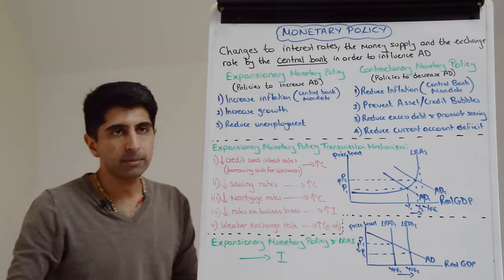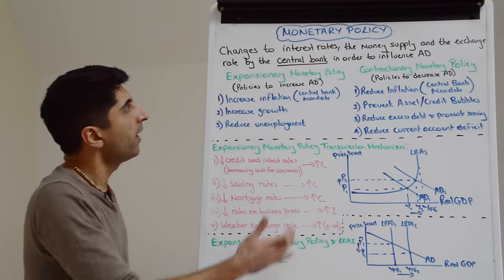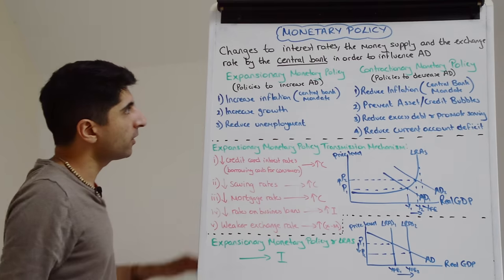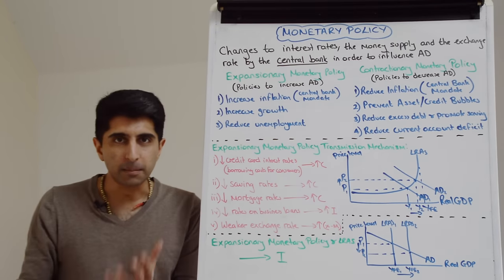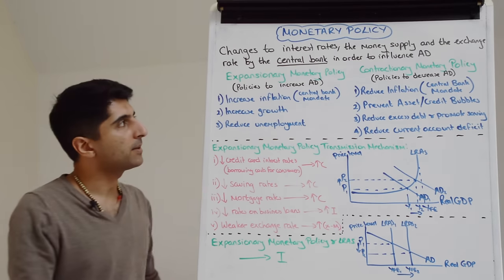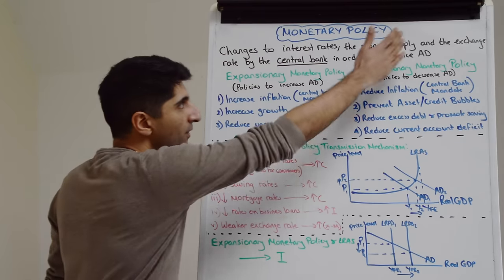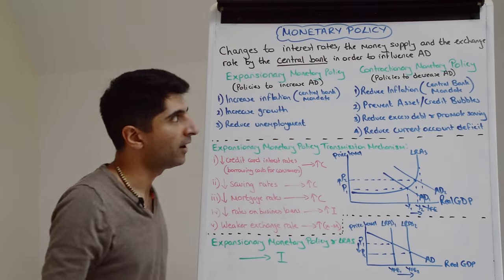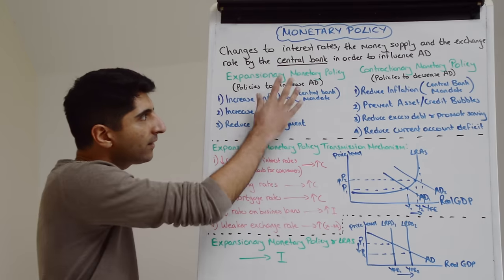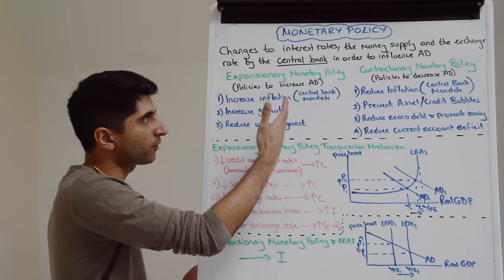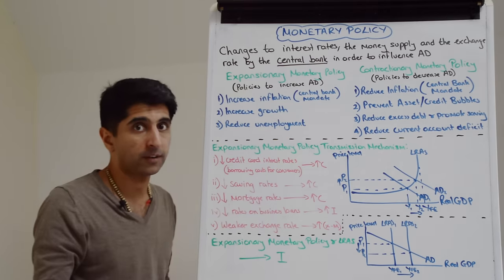Monetary policy can be both expansionary or contractionary. Expansionary monetary policy refers to any of these policies that try to boost aggregate demand, whereas contractionary monetary policies are any of these policies that aim to reduce aggregate demand. Let's see why a central bank would use either expansionary or contractionary monetary policy.